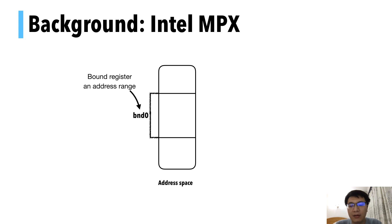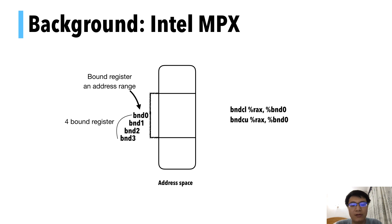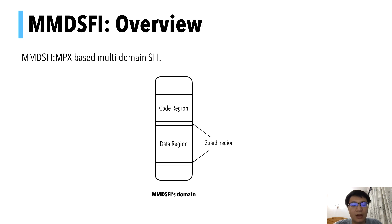Intel MPX is a feature on Intel CPUs. It provides boundary registers, which can represent an address range. MPX provides four boundary registers in total, and two instructions — bound check lower bound and bound check upper bound — to check if an address is in range. If it is, nothing happens; otherwise, a hardware fault occurs. Based on MPX, we developed a new SFI scheme named MPX-based multi-domain SFI, or MMDSFI. A domain of MMDSFI includes a code region and a data region surrounded by two guard regions. Our MMDSFI supports unlimited domains.